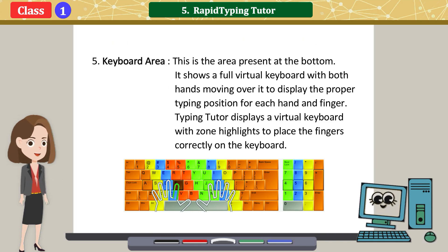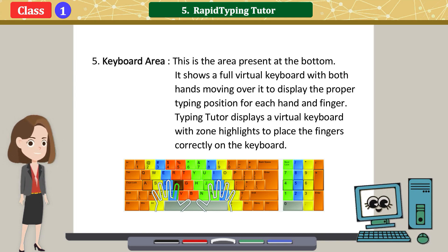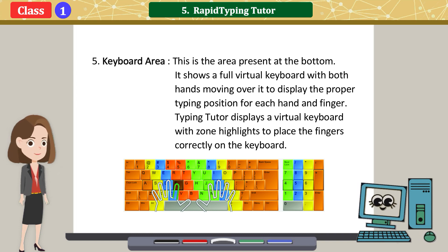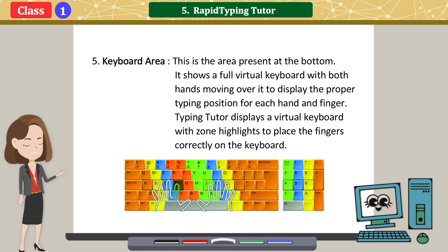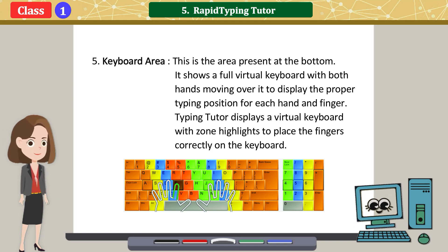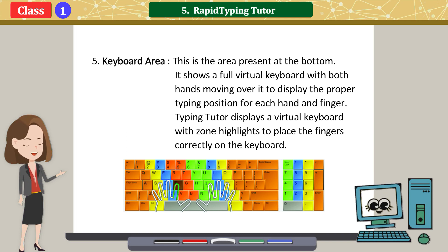5. Keyboard Area: This is the area present at the bottom. It shows a full virtual keyboard with both hands moving over it to display the proper typing position for each hand and finger. Typing Tutor displays a virtual keyboard with zone highlights to place the fingers correctly on the keyboard.